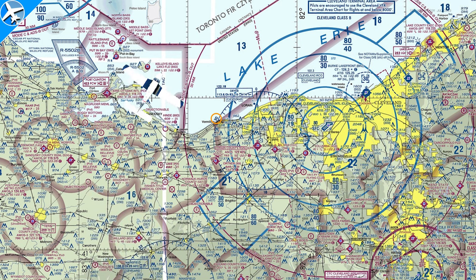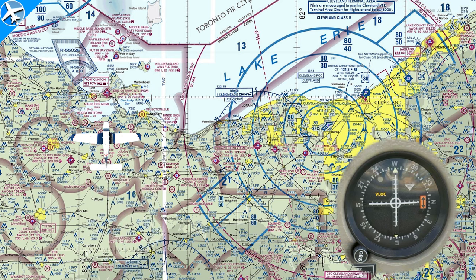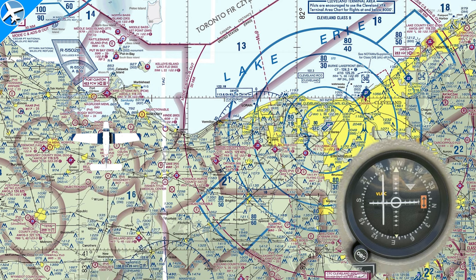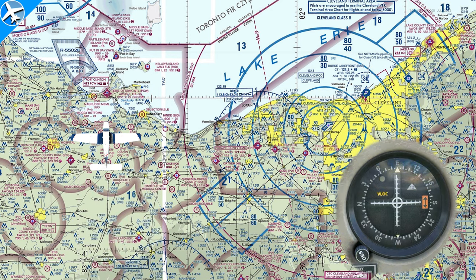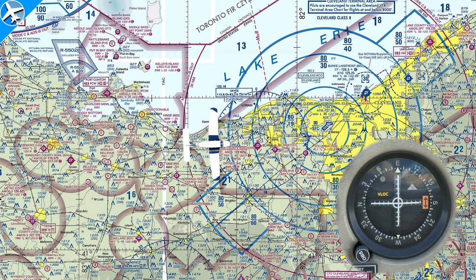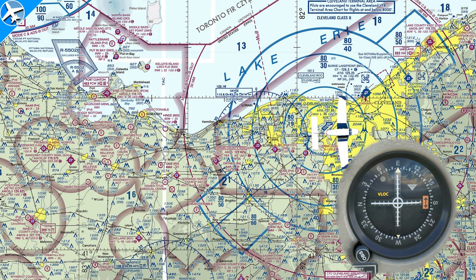Heading has no impact on the radial or the TO/FROM flag indication. Radials are always expressed in relation FROM the VOR. The aircraft is now on the 270 degree radial, but let's say we wanted to fly TO the VOR. The VOR receiver would show a FROM indication with 270 centered at the top. To fly TO the VOR, the OBS would be rotated until 090 displays at the top, giving a TO indication. Once the aircraft flies past the VOR, the flag switches to FROM and the aircraft is then on the 090 degree radial.